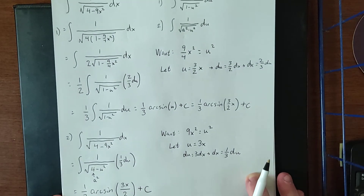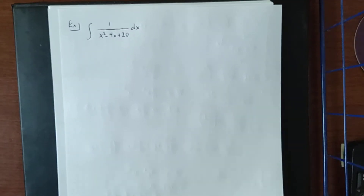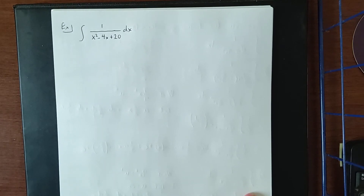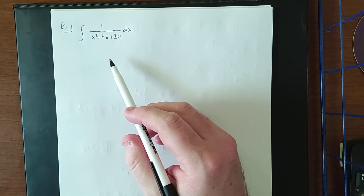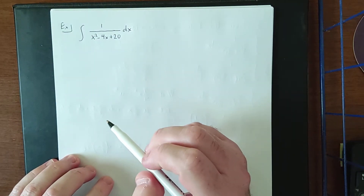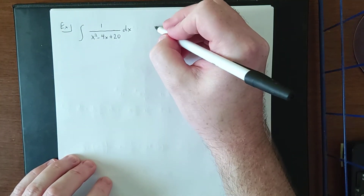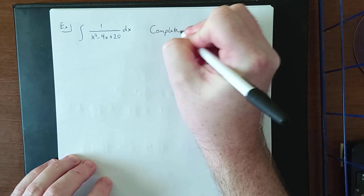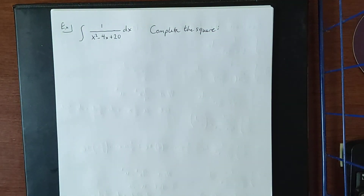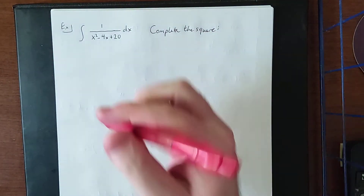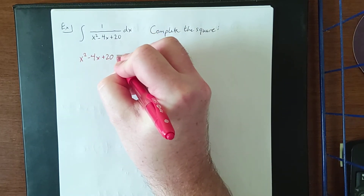Whichever strategy makes sense to you, go for it. We're going to try one more example: the integral of 1 over x squared minus 4x plus 20 dx. This doesn't look like any of our basic forms, and the denominator doesn't factor. So instead, we're going to complete the square, working with just that denominator in a quick algebra aside.